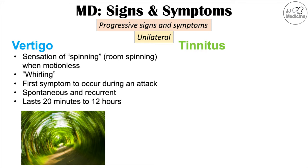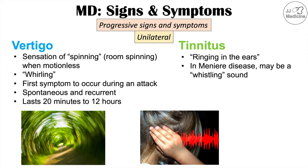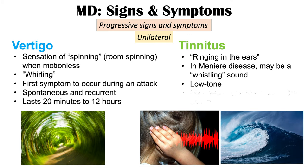Another very important symptom of Meniere's disease is tinnitus, which is a ringing in the ears. Tinnitus can occur in many different conditions and is often described as a white noise, buzzing, or machine-like sound. In Meniere's disease specifically, it can sound like a whistling sound, but it can also sound like a low tone or a roar of the ocean.